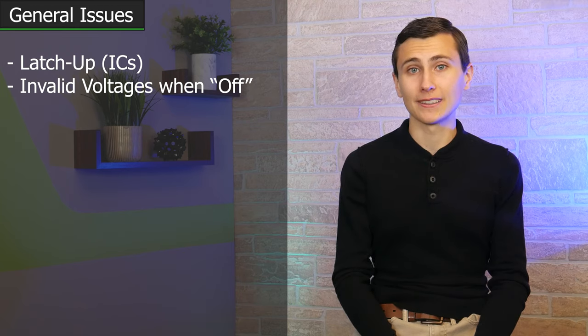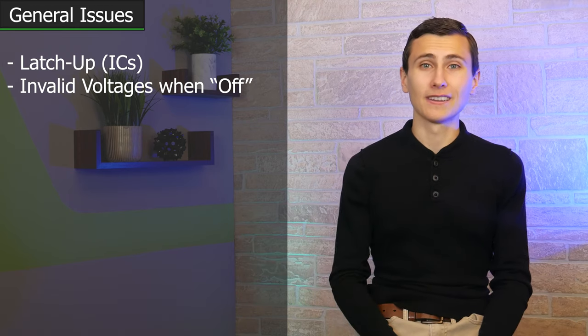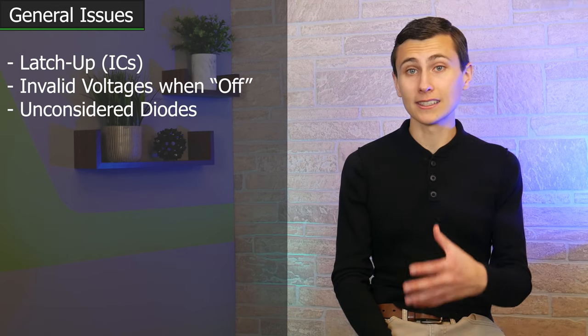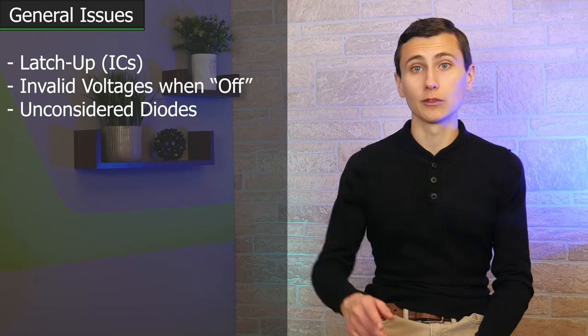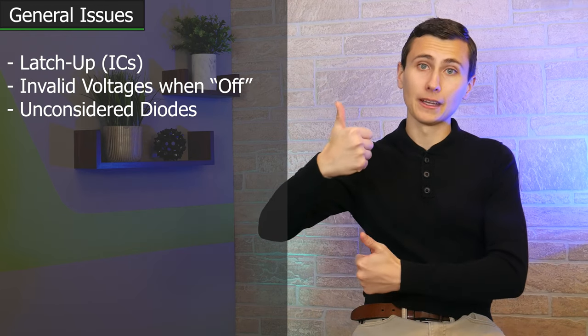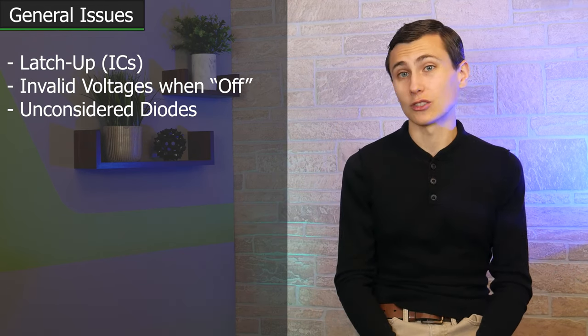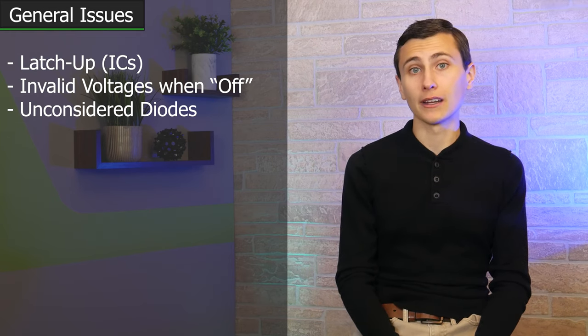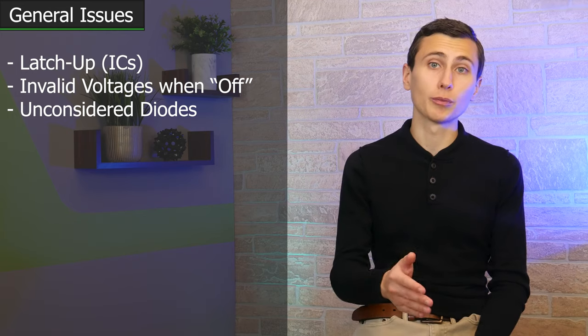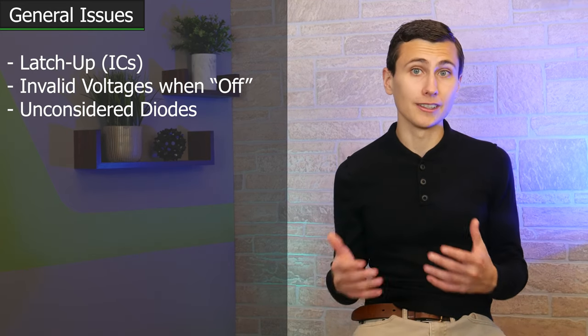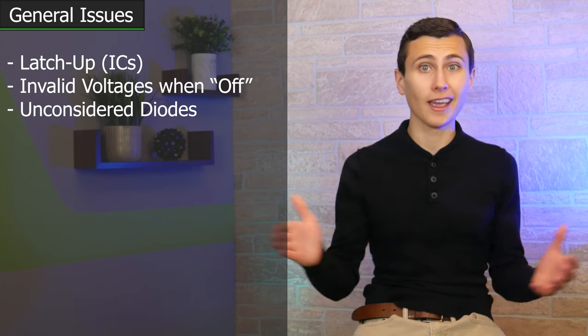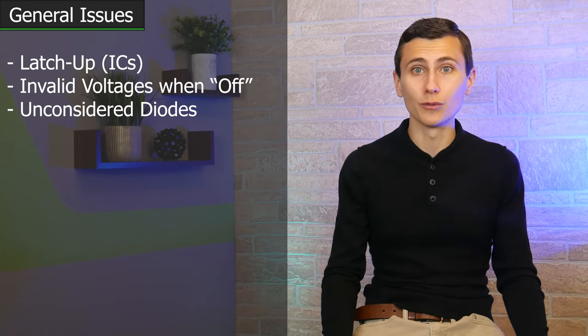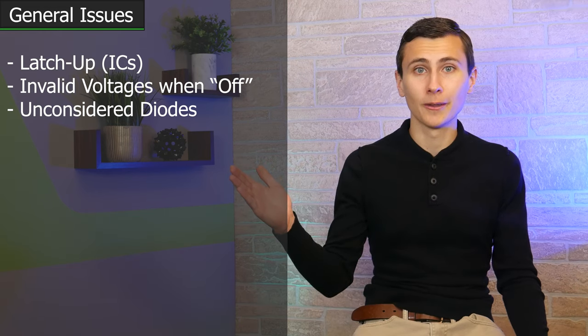Sometimes invalid power states, which is what we just described, can be established through parasitic or unconsidered diodes in components, like ICs, which typically have clamping diodes pointed to both VCC and ground. These diodes help to protect a device against transients like EFT and ESD, but they can also provide unintended current paths if not appropriately considered. Put 0.7 volts across a diode in the forward direction, and, well, current's going to move. It's a diode.